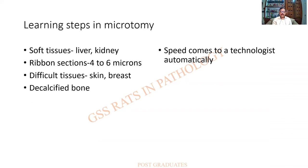Whenever we are to learn microtomy, these steps have been suggested: first, practice on soft tissues such as liver and kidney; go on to ribbon sections which are about four to six microns in thickness; then to difficult tissues such as skin or breast; and finally decalcified bone. Do not worry about speed — in any technique, speed will come to you automatically.